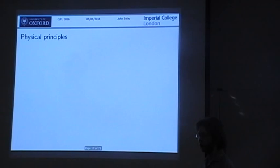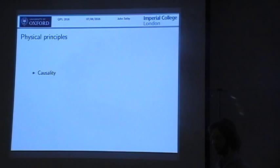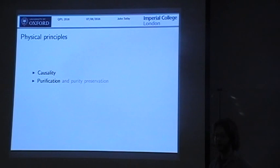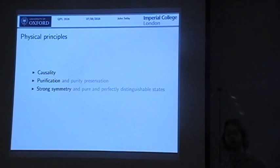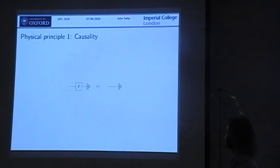The first physical principle is causality, which has been discussed at length in this conference. As everyone now knows, information goes from the past to the future, not the other way. Then we have purification, which has just been described as well, and purity preservation. To me this is just a statement that on the underlying level you can view the world as just being reversible interactions. Mathematically, causality is restated in terms of the unique deterministic effect — the same as what we saw in the previous talk.